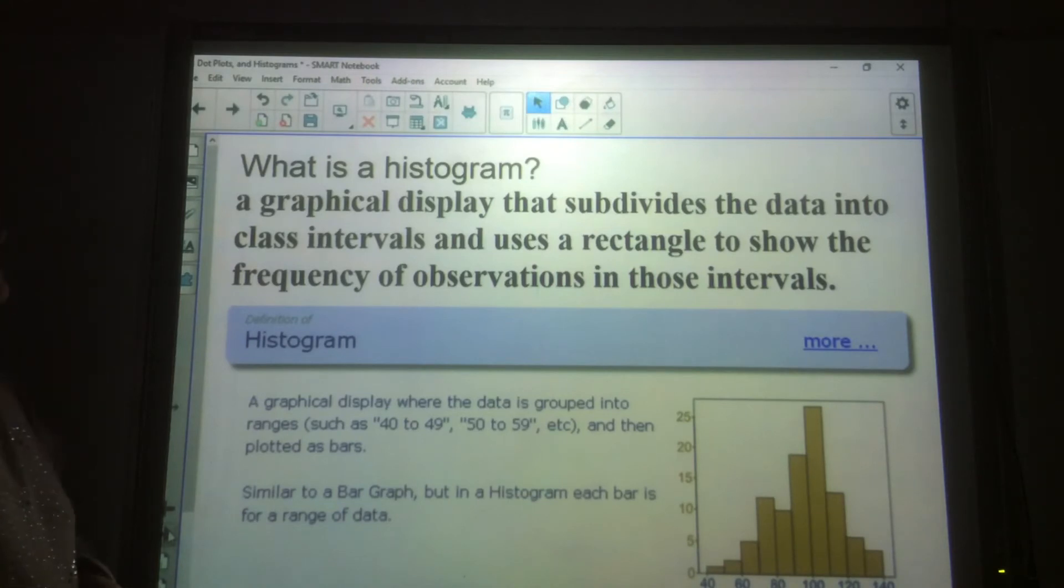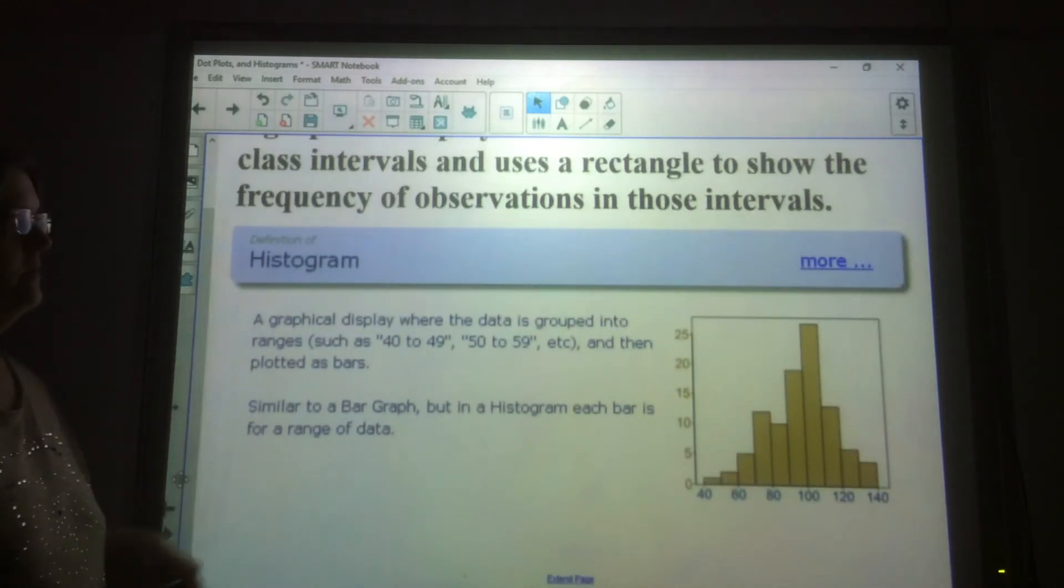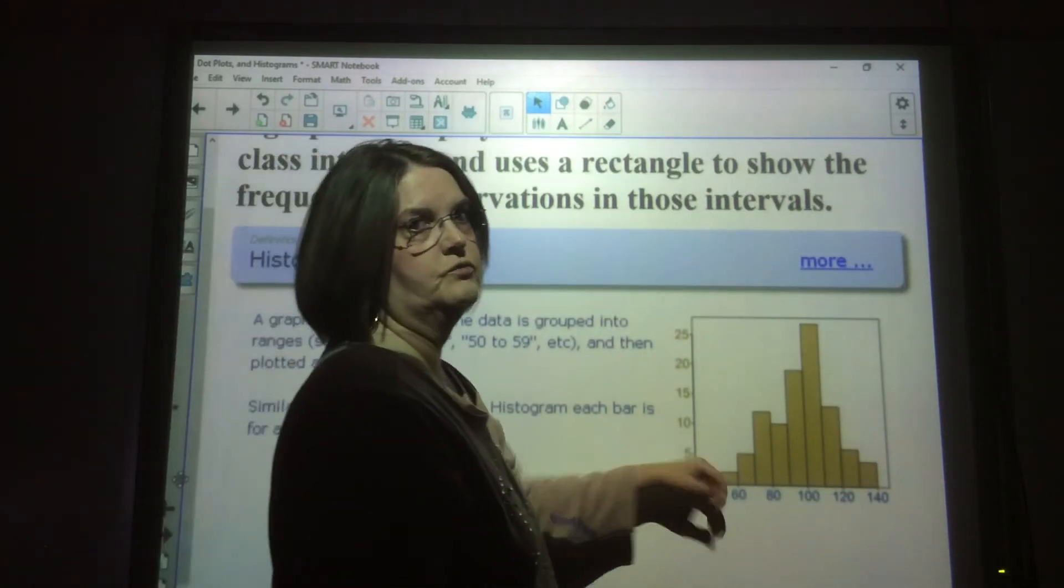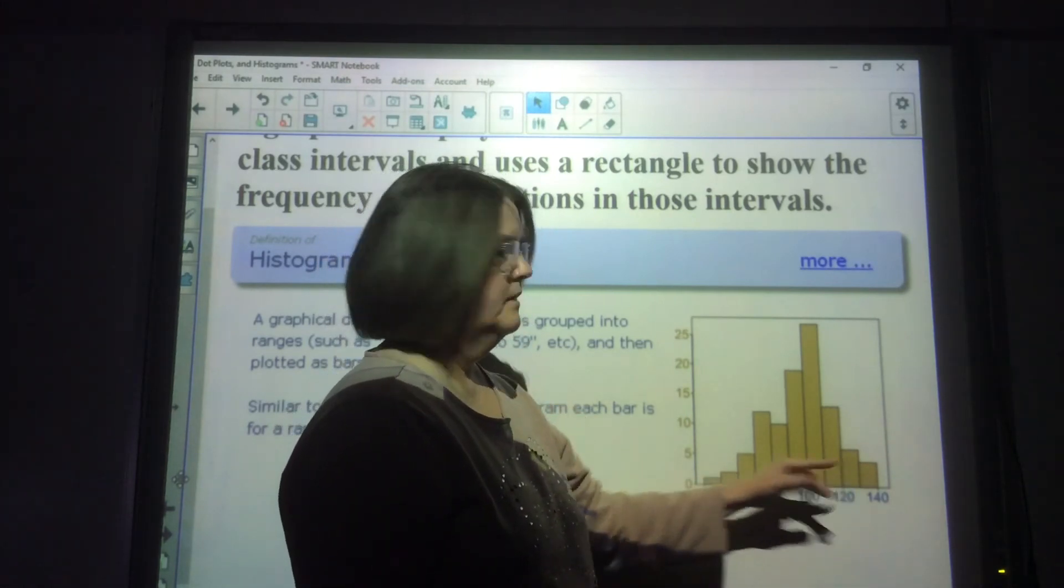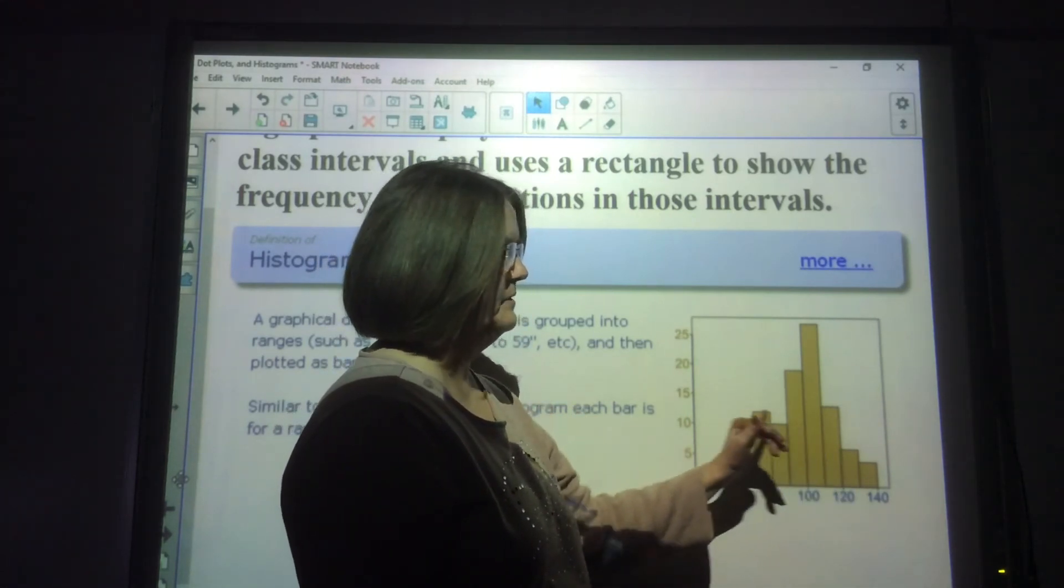All right, now here's a histogram. What is a histogram? It is a graphical display that subdivides the data into class intervals and uses a rectangle to show the frequency of those observations in the intervals. Now, a histogram, the bars. The main thing that you'll notice when you look at a histogram is the bars are connected to each other. They're side by side. There won't be a space between them.